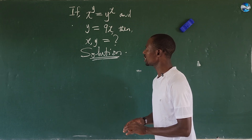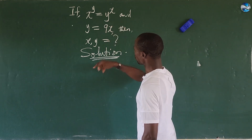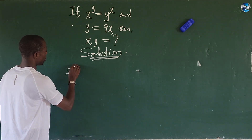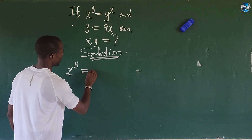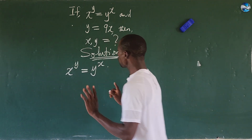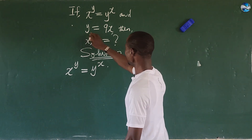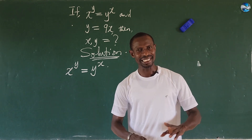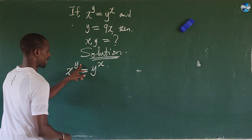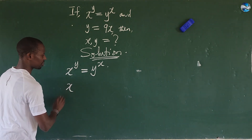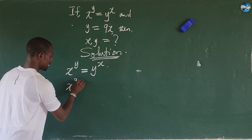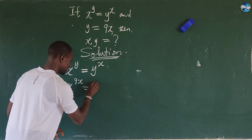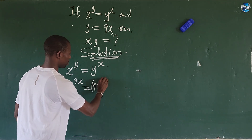Let's take a look at these two equations. Let's call this equation 1 and this equation 2. Equation 1 is x to the power of y equal to y to the power of x. Equation 2 gives us y equal to 9x. So wherever we see y in equation 1, let's substitute 9x. We have y at the exponent, so this gives us x to the power of 9x equal to 9x, with y at the base, raised to the power of x.